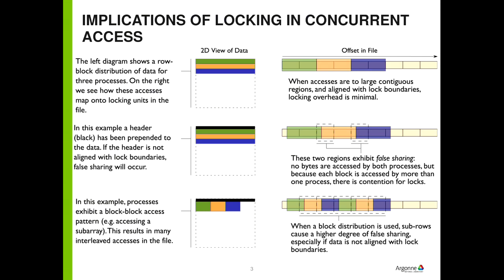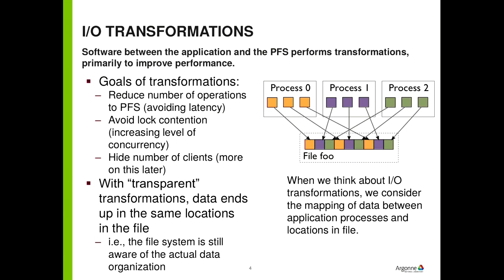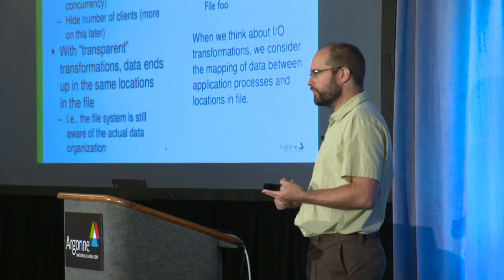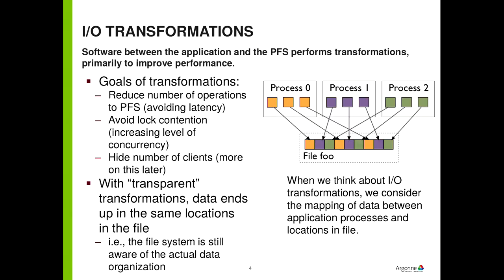Now that you've seen this, we can talk about ways to get around it. The IO transformations happening in the middleware layer are a good place to do file-system-specific optimization. As Phil showed with that performance-versus-request-size graph, small requests in today's systems are brutal. So we want to get thousands of tiny IO requests into a smaller number of larger requests.